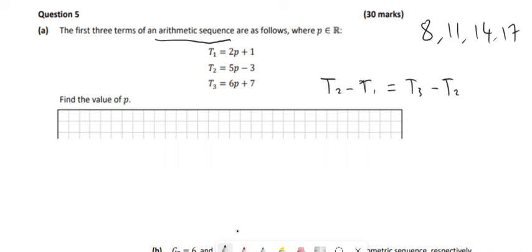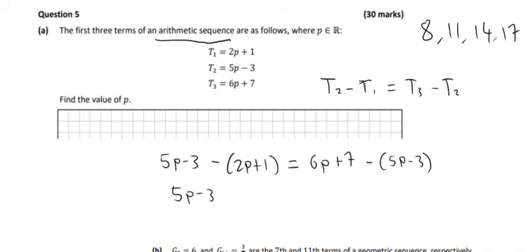So T2 is 5P minus 3. So if I take away 2P plus 1 from that, that has to be equal to T3 which is 6P plus 7 minus T2 which is 5P minus 3. And it's just solving this equation then. So 5P minus 3 minus 2P minus 1 has to be equal to 6P plus 7 minus 5P plus 3.